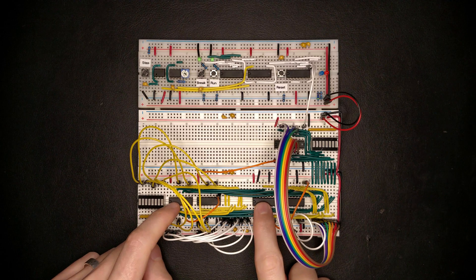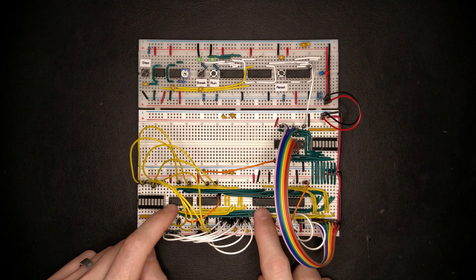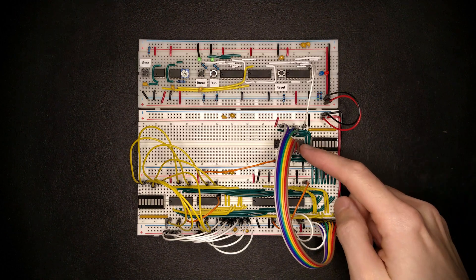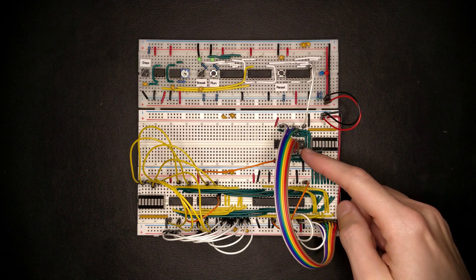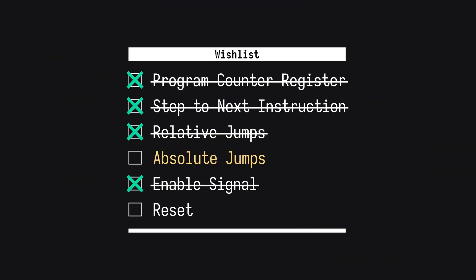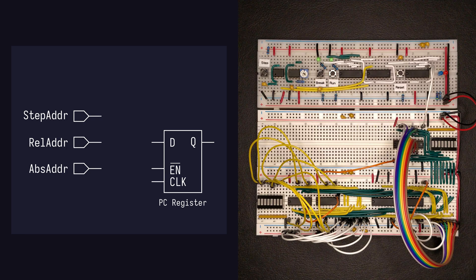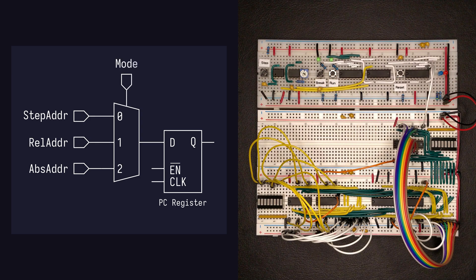So we have two circuits now that compute a next address through some means. We can also feed a totally different address into the program counter register, which would implement a kind of absolute jump where the target address might come from a CPU register. So we need a way to select which one is actually used to update the PC to the next state. And for this we need a multiplexer with three inputs, one input for each of the options we have.